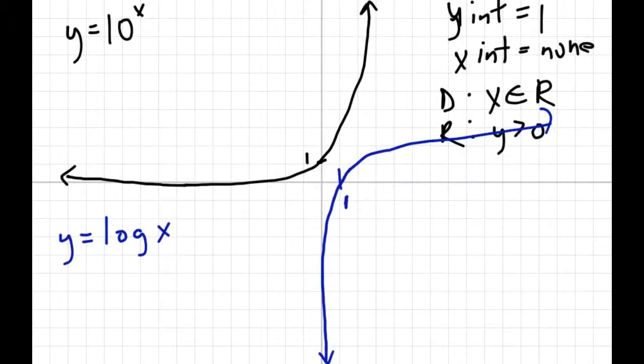So you can see what I mean when I say diagonal reflection, it's sort of like if we drew a diagonal line like that down the middle, you can see one graph is just sort of a reflection of the other.